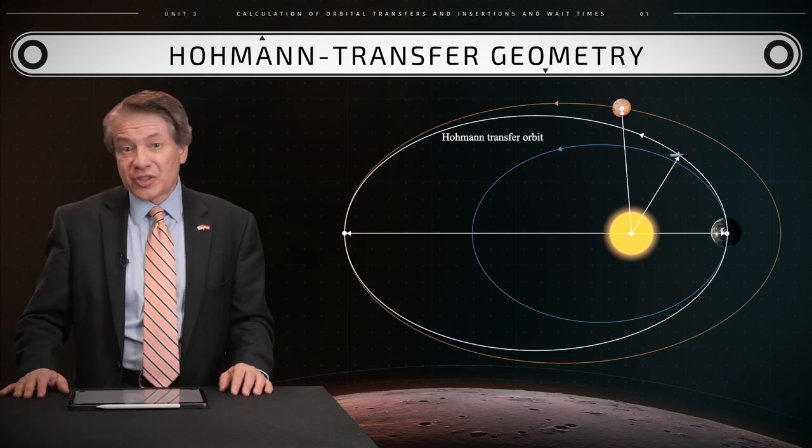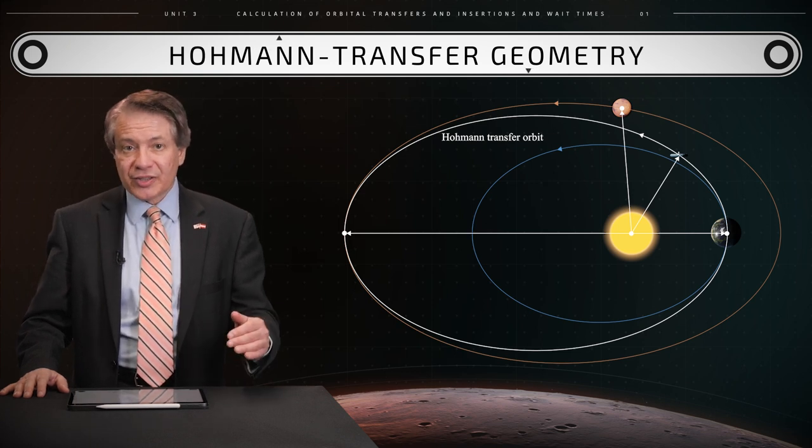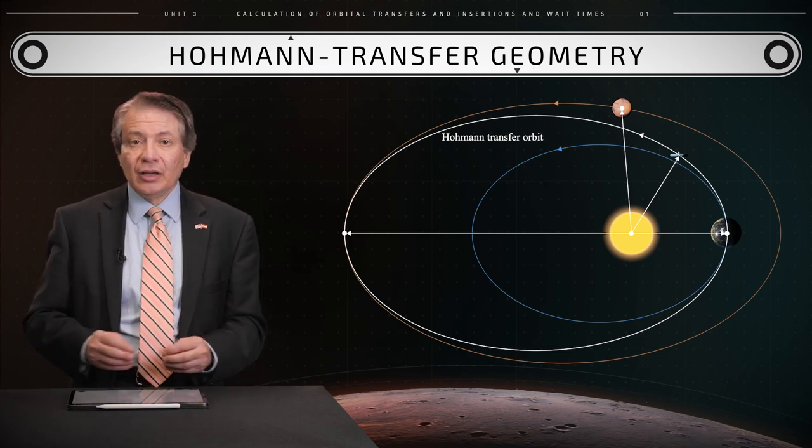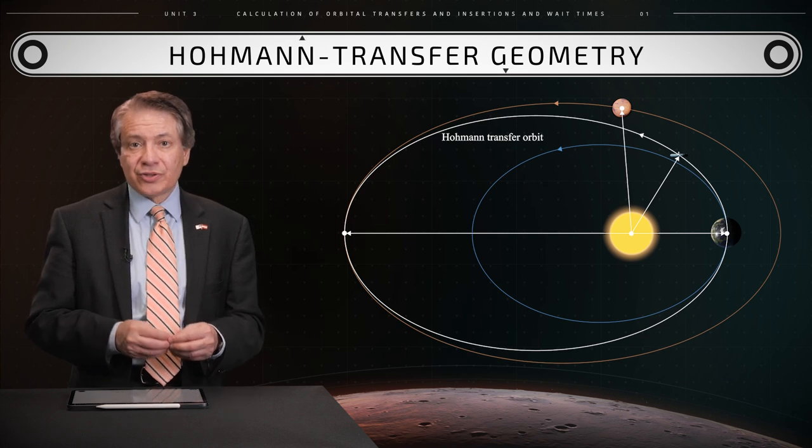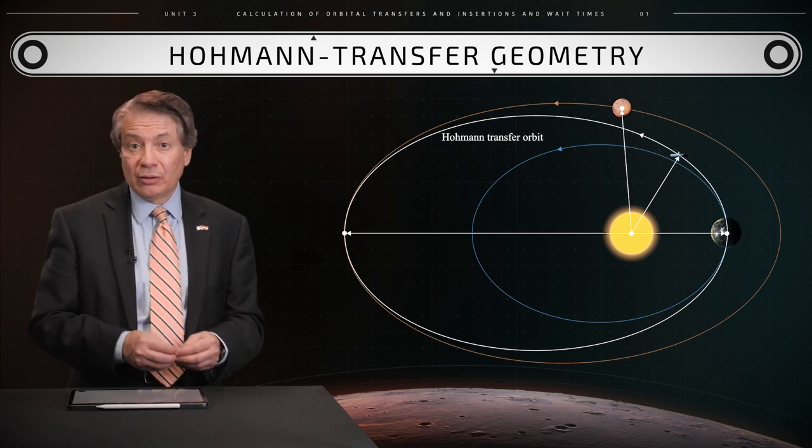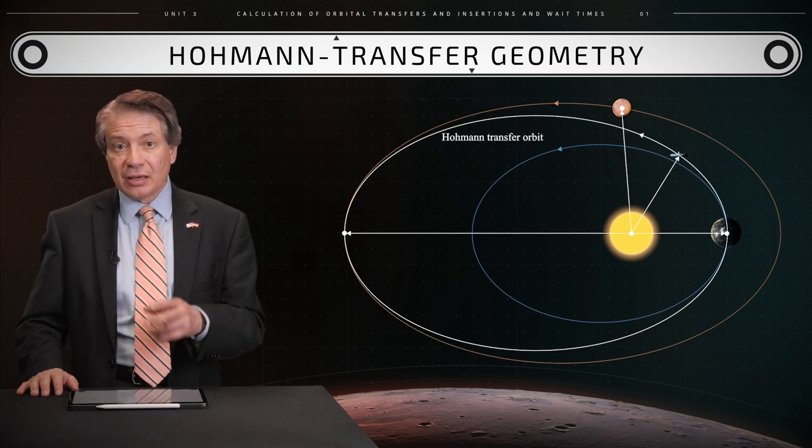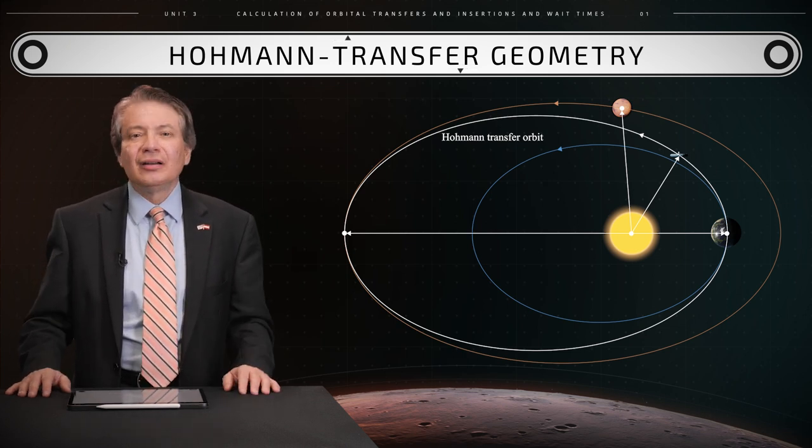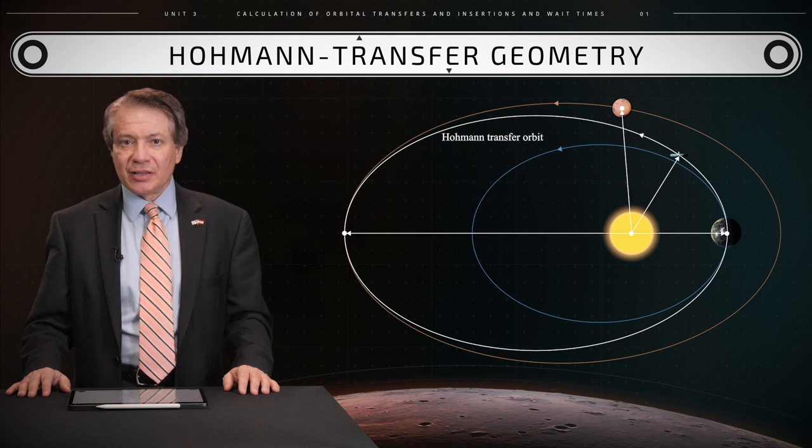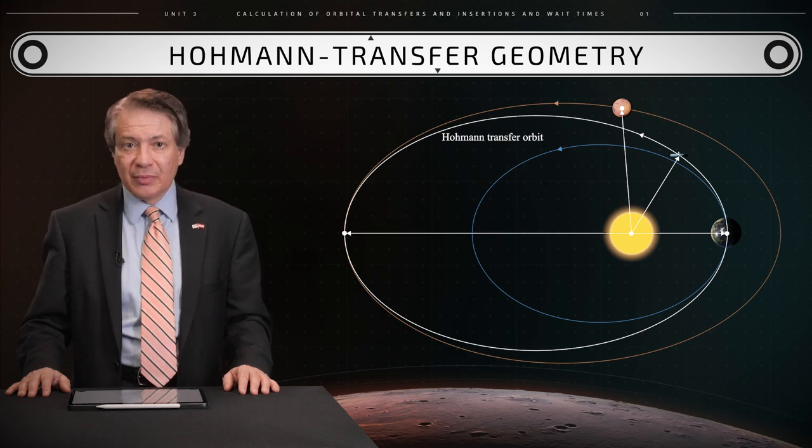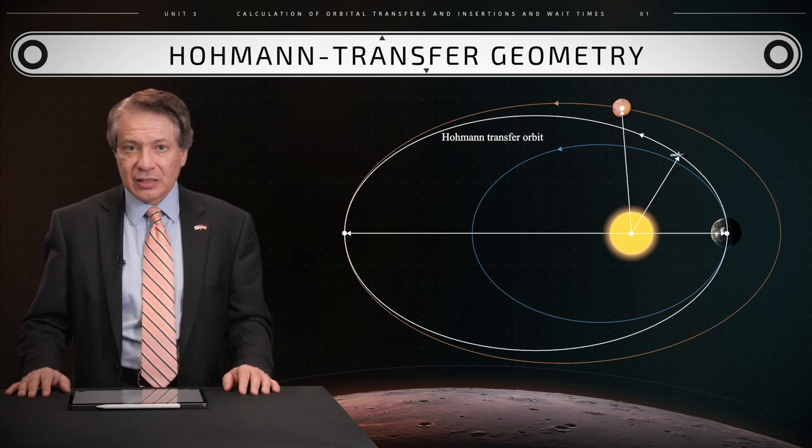For the space probe to rendezvous Mars after leaving Earth, the relative angular position on Mars with respect to Earth must equal the result we obtained in a previous video. This method provides an estimate of the needed mission time and initial angular speed.